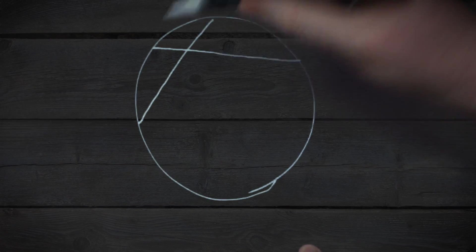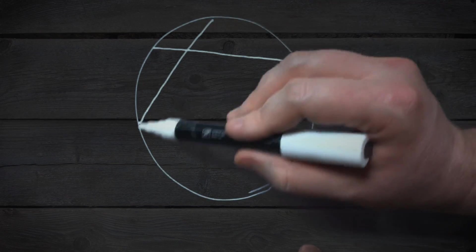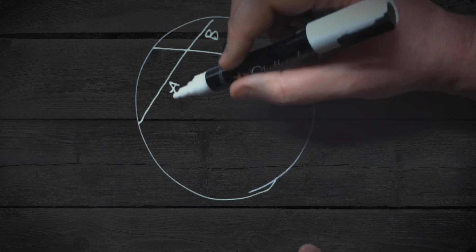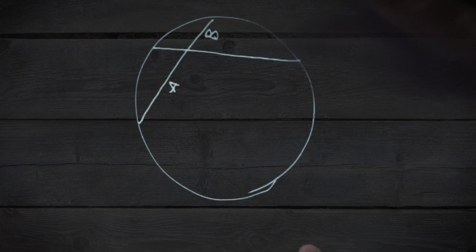Now obviously this isn't a very clean circle, but these two chords here, if they intersect, the theorem states that the part A and the part B, the product of those, so if you multiply A times B, will always be equal to C times D.